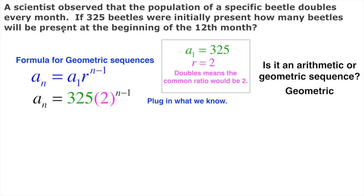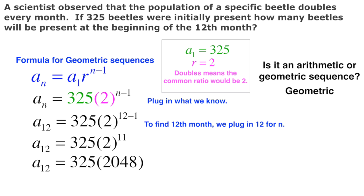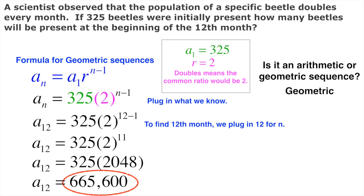Now we're asked how many beetles would be present at the beginning of the 12th month. So we're going to plug in 12 for both of the Ns. Now we just simplify the right-hand side, and that will give us how many will be present at the beginning of the 12th month. 2 to the 11th is 2048, and we multiply 325 times 2048, which gives us a total of 665,600.